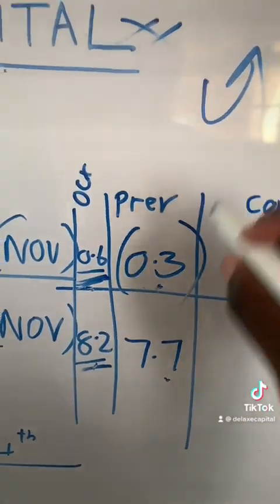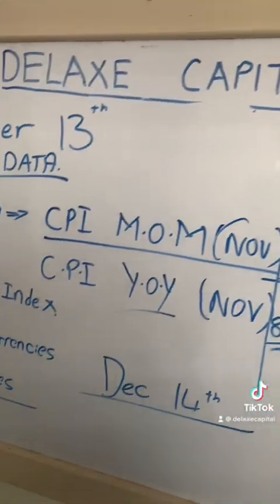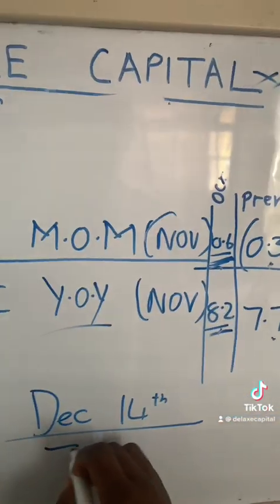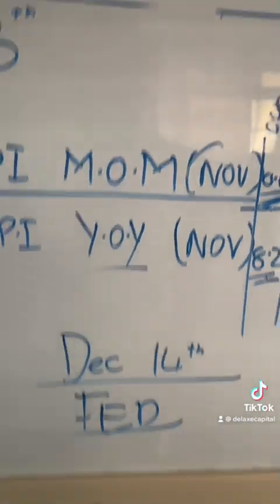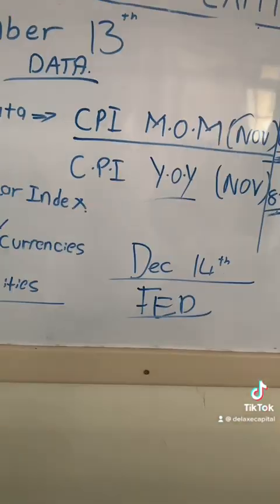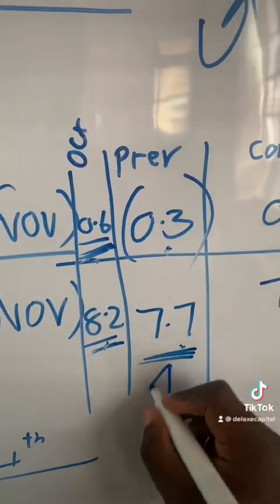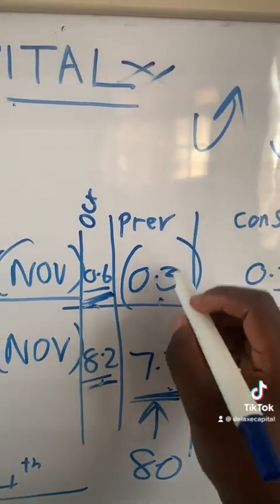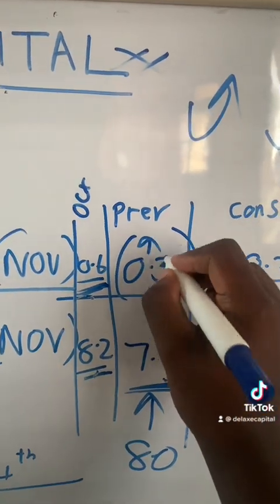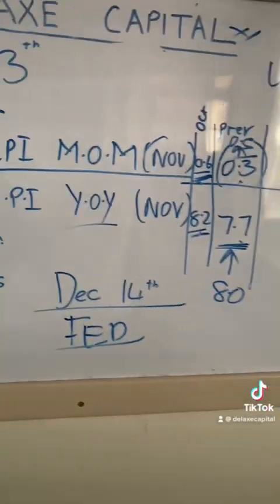You saw the market reverse hugely because the policies that the Federal Reserve was implementing started working. Now this data today will be very important. This is the number to watch: if this number happens to increase from 7.7 to 8 percent, and if this number goes from 0.3 to maybe 0.5, we might be set to see a significant reaction.